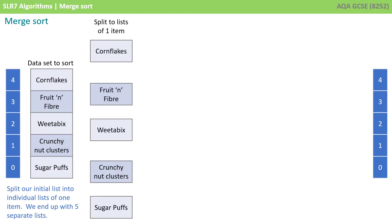We start by splitting our initial list into individual lists of one item. We end up with five separate lists as shown here.